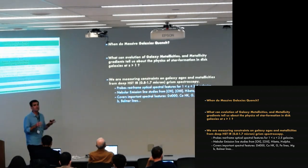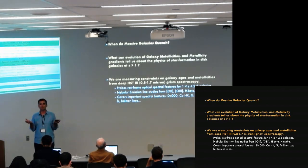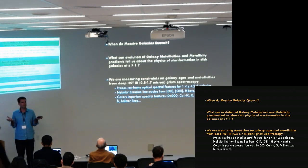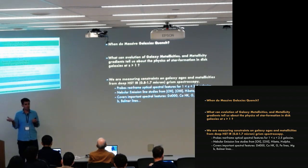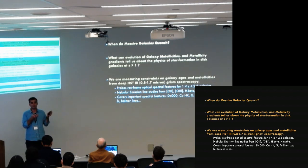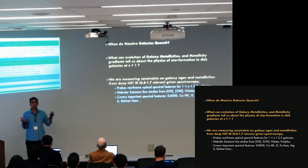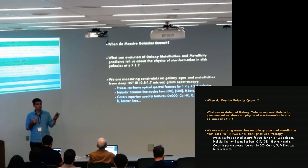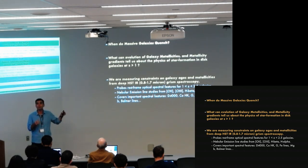This slide will serve as both an introduction and to set the stage for questions we're interested in answering observationally. One of them — when do massive galaxies quench? We heard earlier today that this happens at very high redshifts. There are a lot of indications from studying nearby massive red galaxies that they formed their stars very early in the history of the universe and quenched very rapidly. The problem is we're observing them maybe 10 billion years after they quenched, and the uncertainties on stellar population parameters are quasi-logarithmic. So you really want to study them as close to their quenching period as possible, which forces us to observe them at higher redshifts.